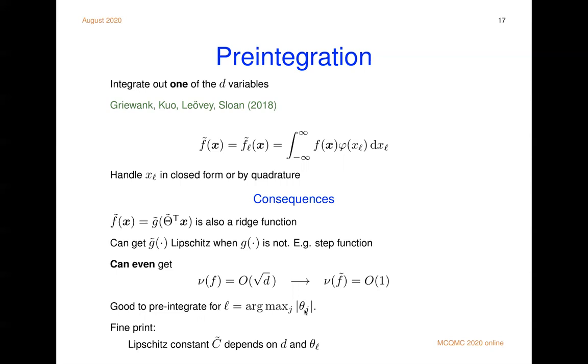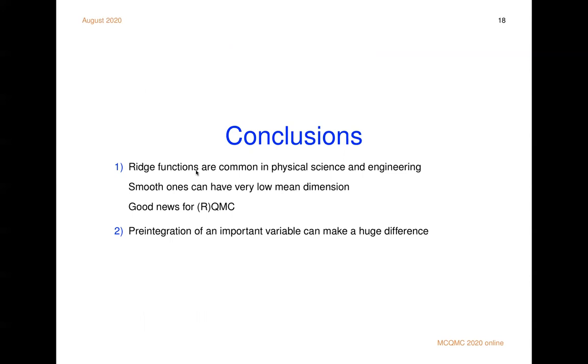So two conclusions to share with you. First, ridge functions are pretty common in the physical science and engineering world. And smooth ones will have a low mean dimension. So I think there must be lots of good use cases for quasi Monte Carlo and randomized quasi Monte Carlo in the physical and engineering sciences. The second one is that pre-integration of an important variable can be astonishingly effective. It can turn a problem from QMC unfriendly into QMC friendly.